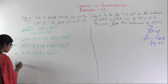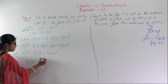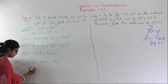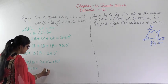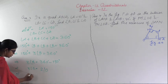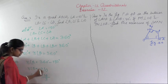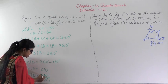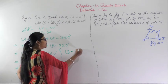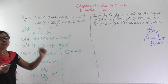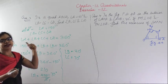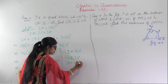Therefore angle B equals 210 divided by 3, which gives angle B equals 70 degrees. Since angle B equals angle C equals angle D, all three angles are 70 degrees each. So angle B equals angle C equals angle D equals 70 degrees. This is the answer.